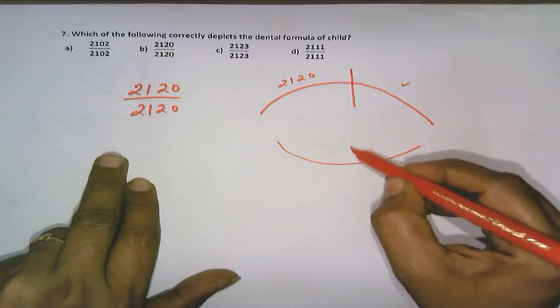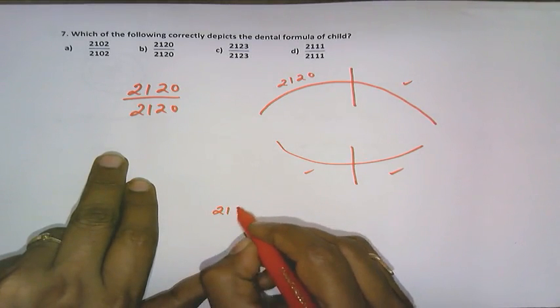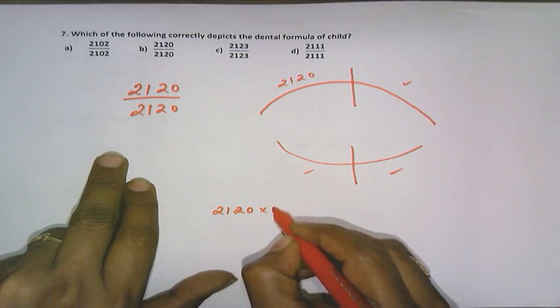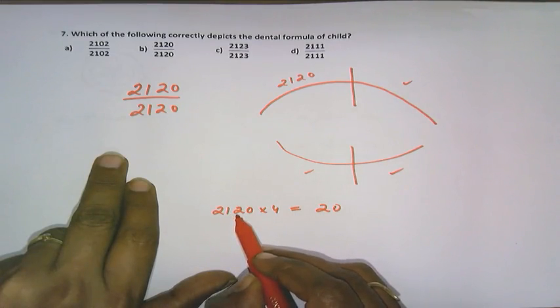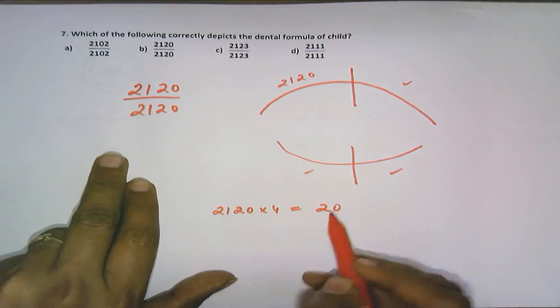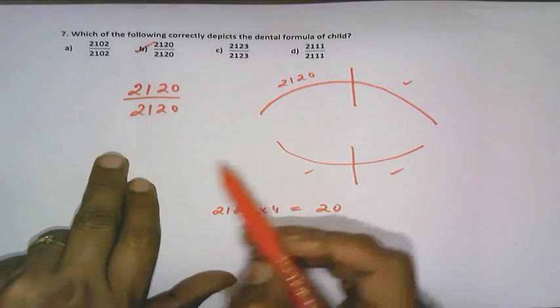So that makes it 2, 1, 2, 0, that is 4 times, that makes it 20 teeth. That is 2 plus 1, 3, another 2, 5, 5 into 4, 20 times. So our option is option B students, option B. As we move on to the next question.